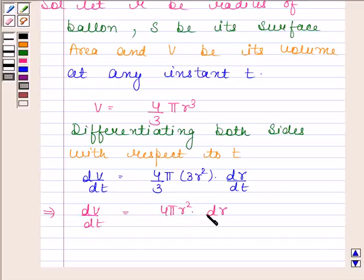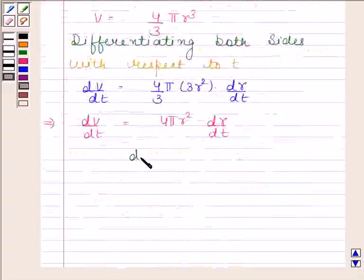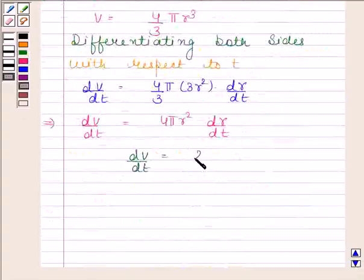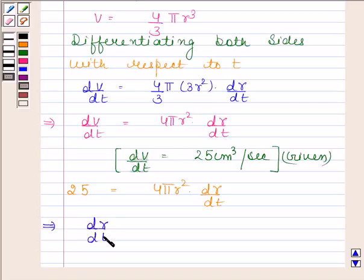In the question we are given that the volume of the spherical balloon is increasing at the rate of 25 cm³ per second. That means dV/dt equals 25 cm³/sec. By substituting 25 in place of dV/dt we get 25 = 4πr² dr/dt. This implies dr/dt = 25/(4πr²).